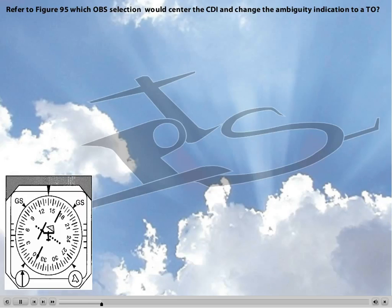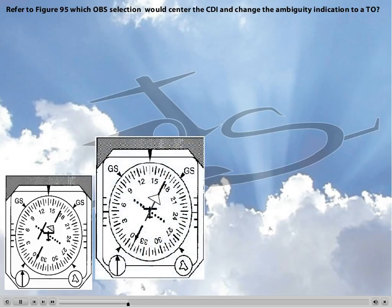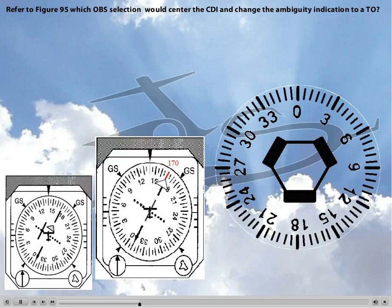If you're familiar with the way we teach VORs at Pilot Training Solutions, if the needle is centered, whichever direction the flag points towards represents the heading to the station. To answer this question, we need to follow a couple of simple steps. First, we need to look at figure 95, and we're going to pretend that the needle is centered. As you see from the animation, if it was centered, our heading to the station would be 170. So let's draw a VOR station and a bearing of 170 to it.